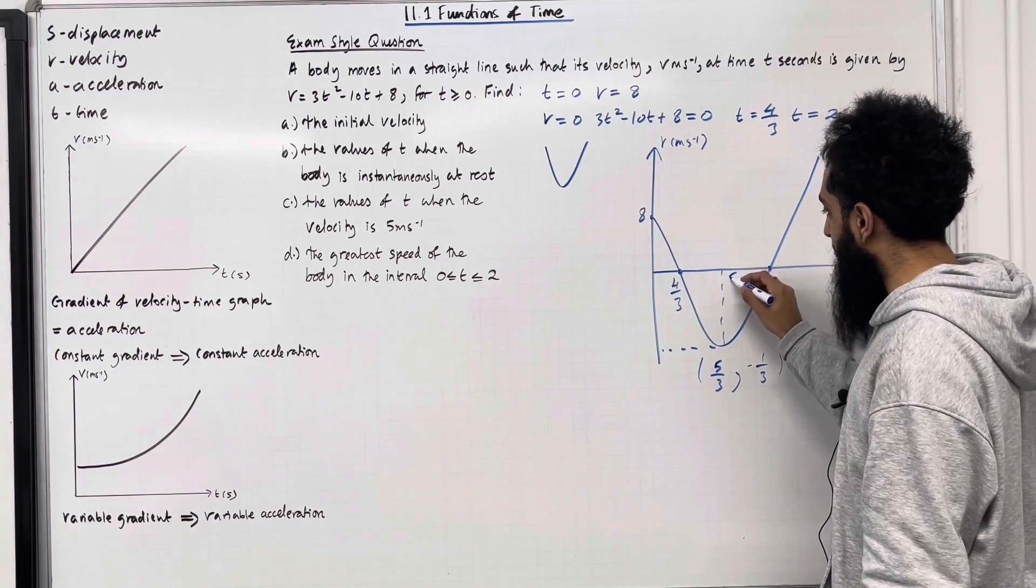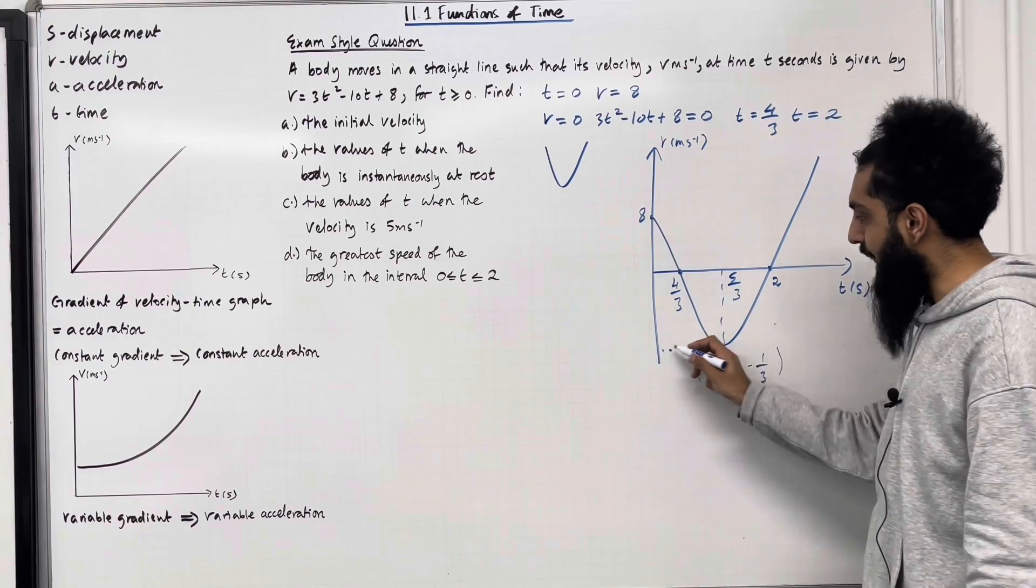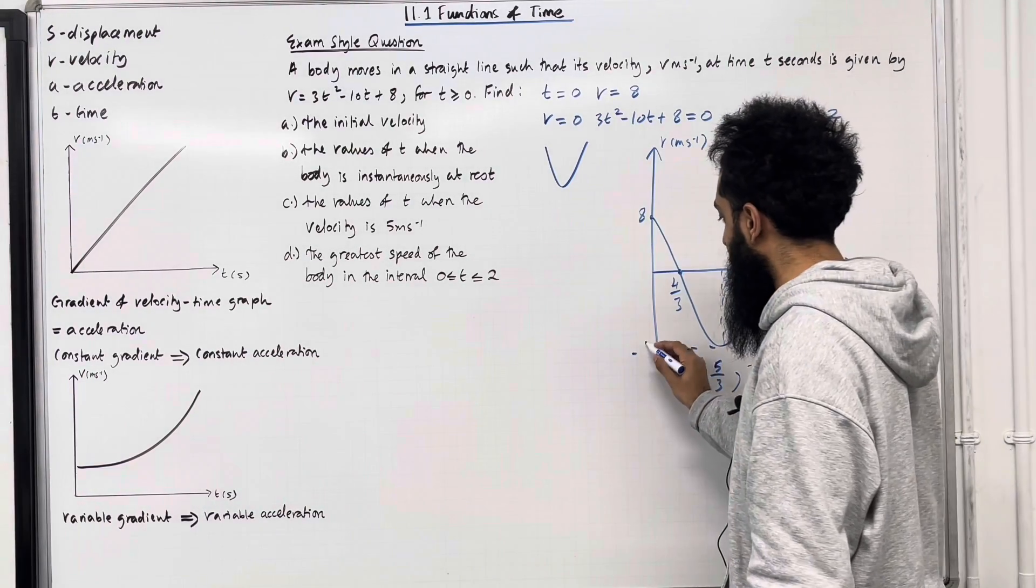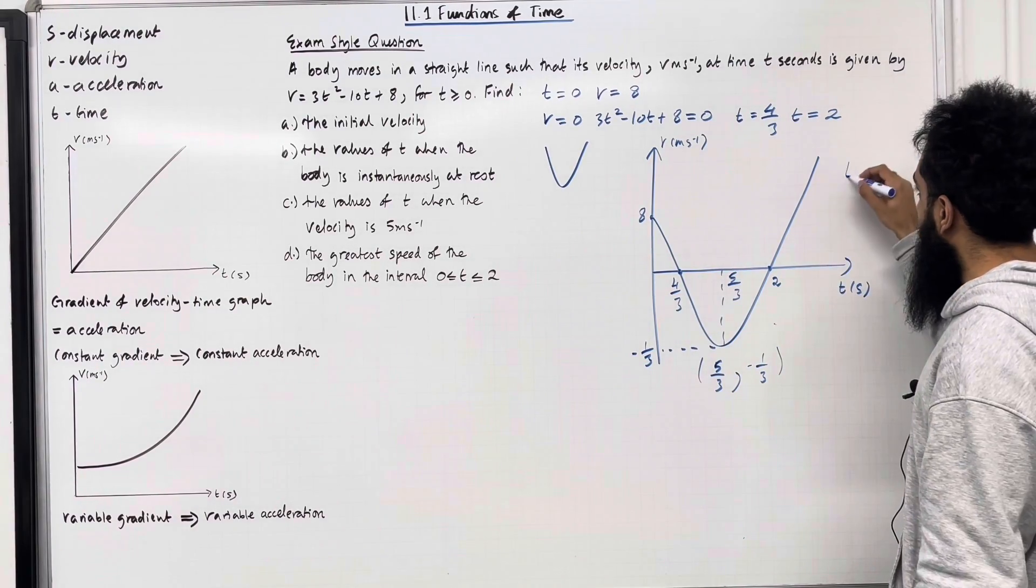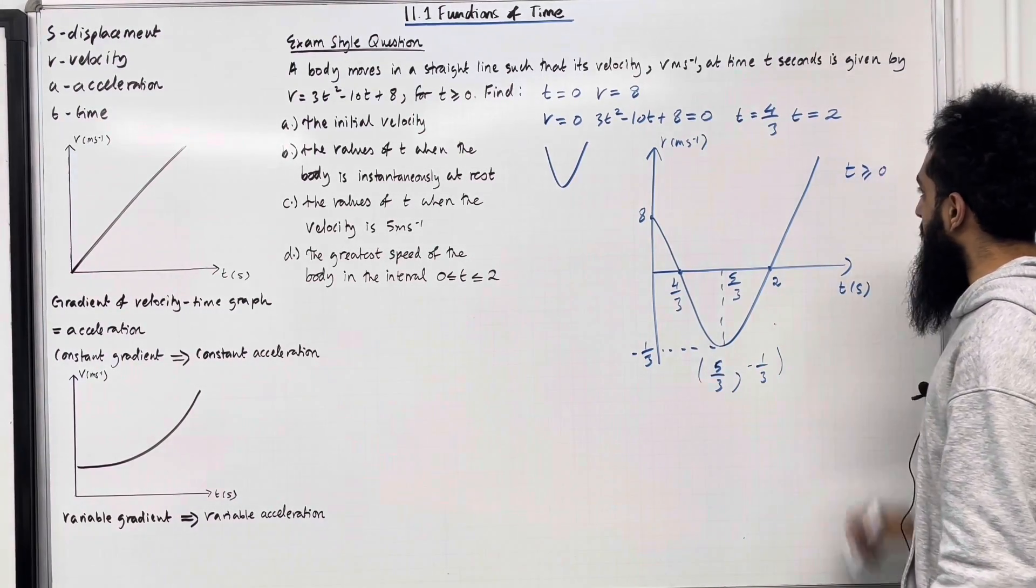Okay, so the t-value here is 5 over 3. And the v-value over here is minus 1 over 3. So that there is my complete sketch of the velocity-time graph. For the restriction, t is greater than or equal to 0.